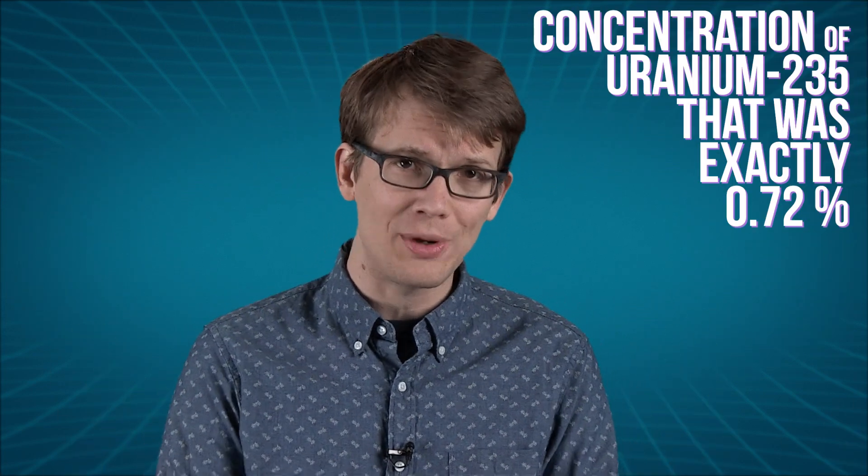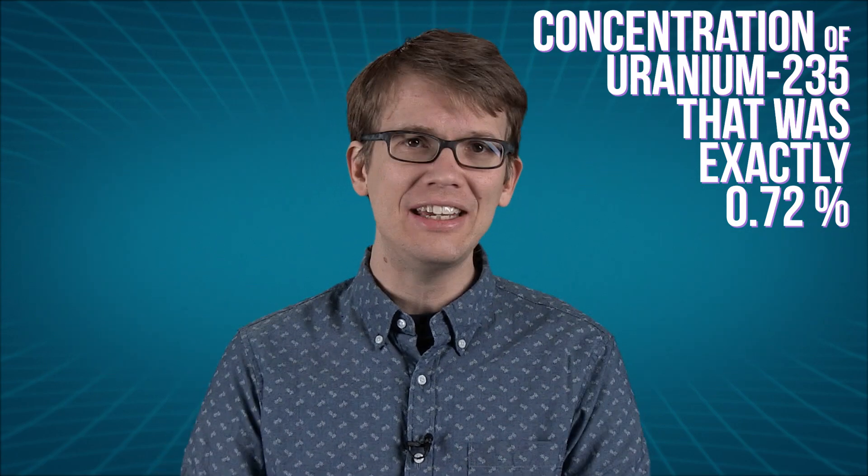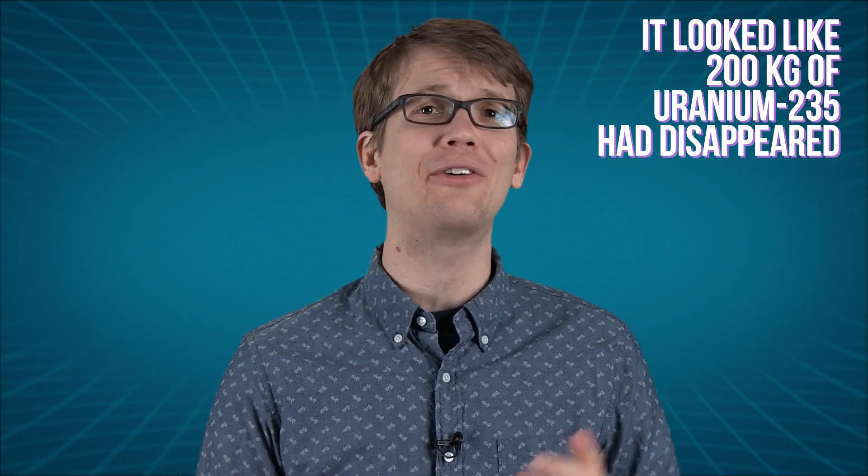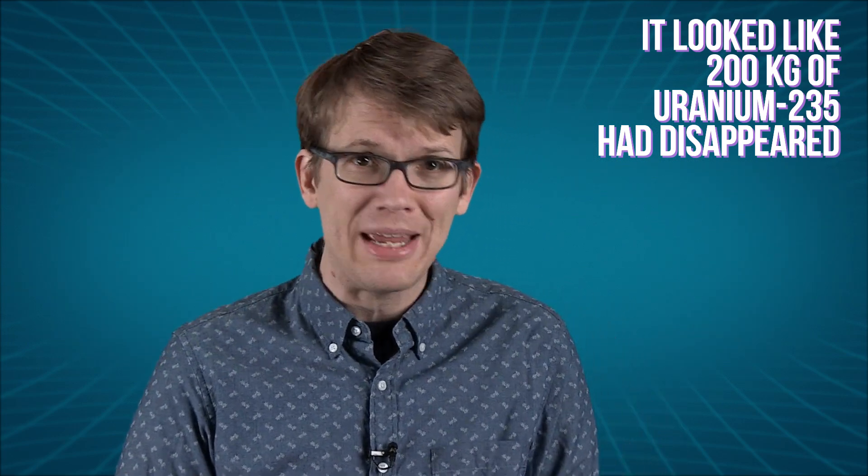Now, uranium ore should contain the same ratios of different isotopes, no matter where it's found in the world. So the French scientists knew that in the ore they were studying, they were supposed to find a concentration of uranium-235 that was exactly 0.72%. But it turns out that they only had a concentration of 0.717%. That might not sound like a lot, but spread out over the giant mine at Oklo, it looked like 200 kilograms of uranium-235 had disappeared.